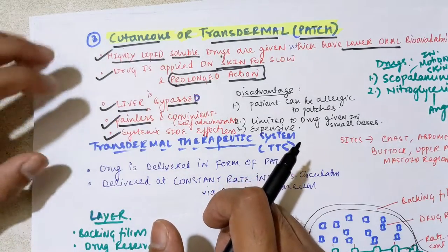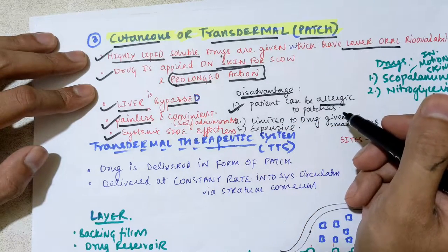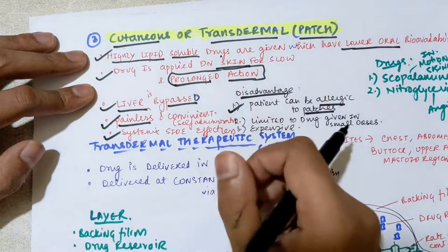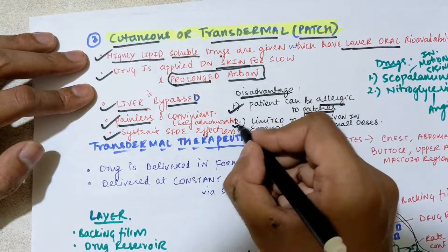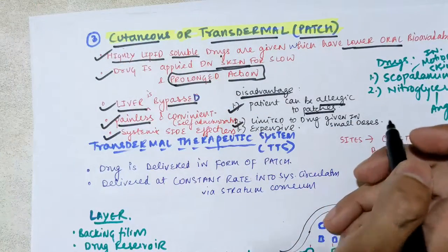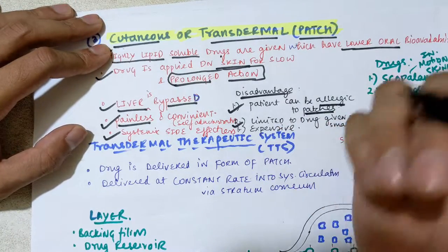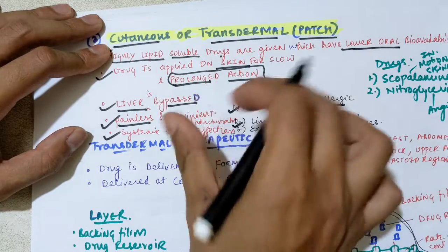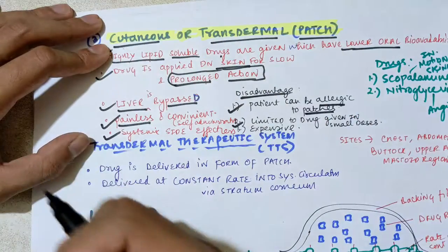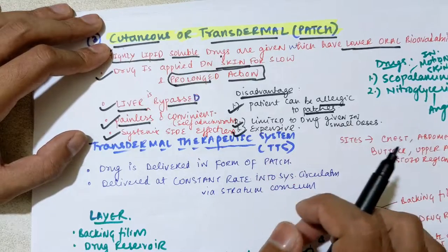Now the disadvantages: some patients can be allergic to the patches — they may react to the adhesive bandage placed on the skin. Also, drugs can only be given in small doses — large doses cannot be given because of the very slow release rate. This is a limitation, and transdermal patches are also expensive.